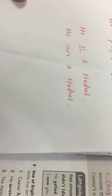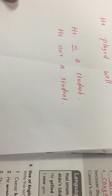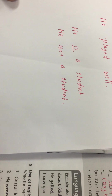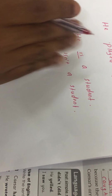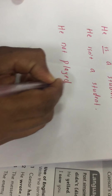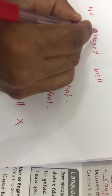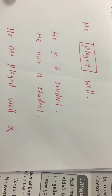But in 'he played football' or 'he played well,' we cannot find an auxiliary verb to add 'not.' So 'he not played well' is not correct — it is grammatically incorrect. In these cases, we want to split the main verb 'played' into two parts.